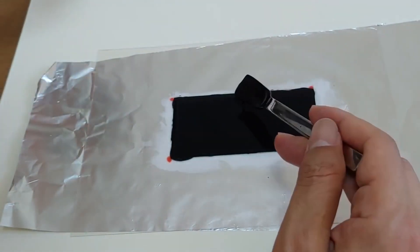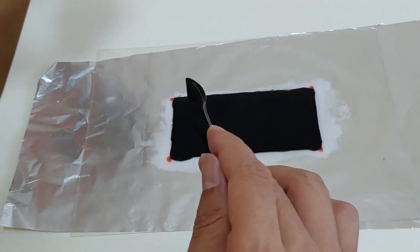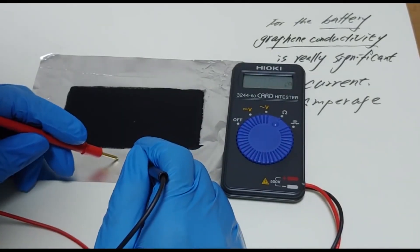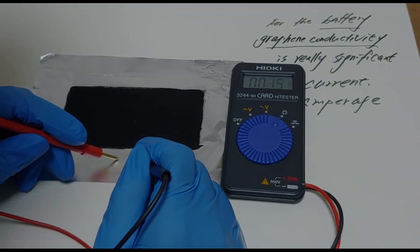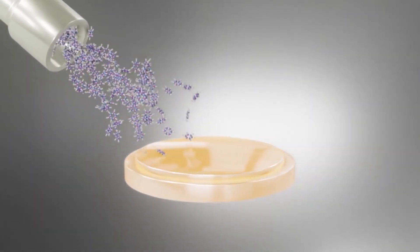The electrical conductivity of battery electrodes is projected to rise using graphene, which will enhance their performance and mechanical stability. It will also aid in the reduction of battery costs and the reduction of environmental impact.